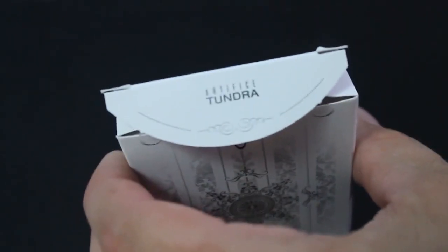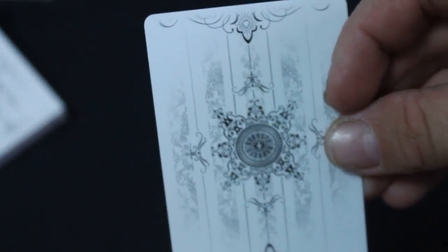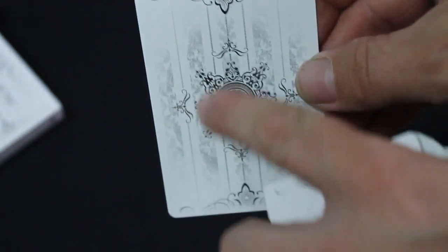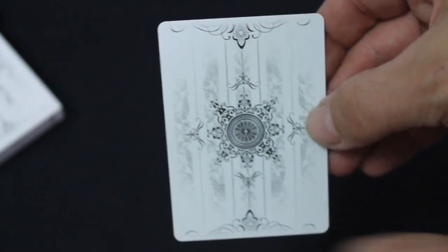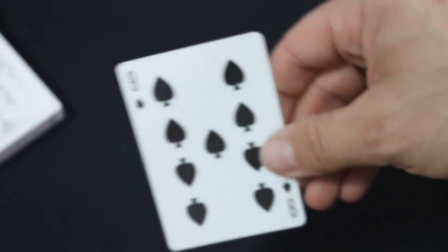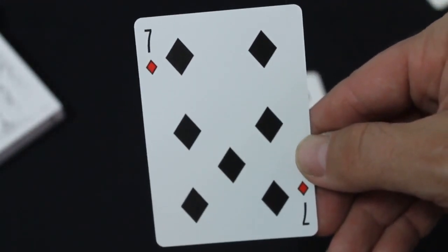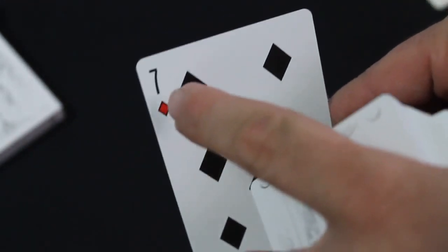That card, you get a double backer. And there's your back design. It's just like the other Artifice decks, except just black and white. And again, a lot of the colors, a lot of background is faint, dull, whatever you want to call it. You do get the Artifice pips and indexes, which is nice. The red cards, diamonds and hearts, are the same as the other deck, just the red pip in the index.